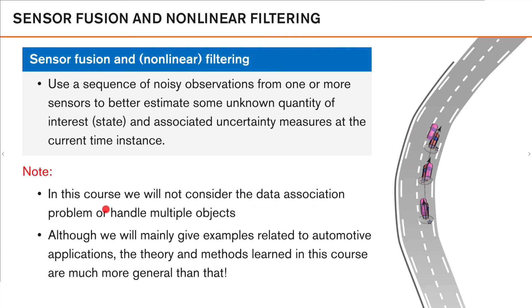Now, we should note that we will not consider the data association problem or handle multiple objects in this course. That is, we could have an additional vehicle from which we also receive observations. As the sensor will typically not tell us from which object a specific measurement came, we need to figure this out ourselves. This is an interesting problem in itself, and something that we have devoted large parts of our sister course, Multi-Object Tracking for Automotive Systems, to. So if you are intrigued by these types of problems, we would highly recommend that you also study that course, which can be seen as a continuation of what you will learn here. Having said that, there are still many interesting problems that can be solved by only using the methods you will learn in this course, and we will look at some examples in a bit.